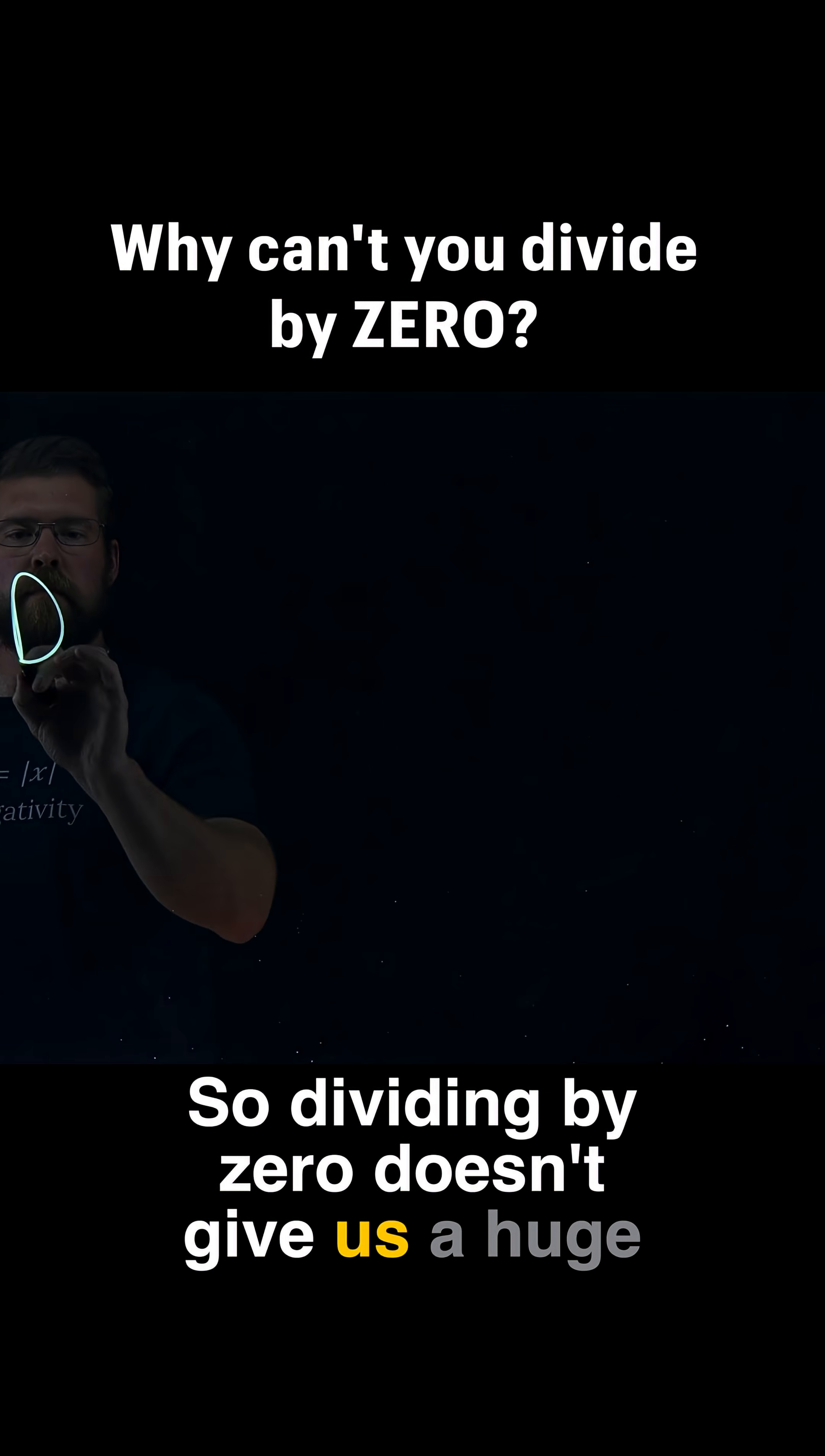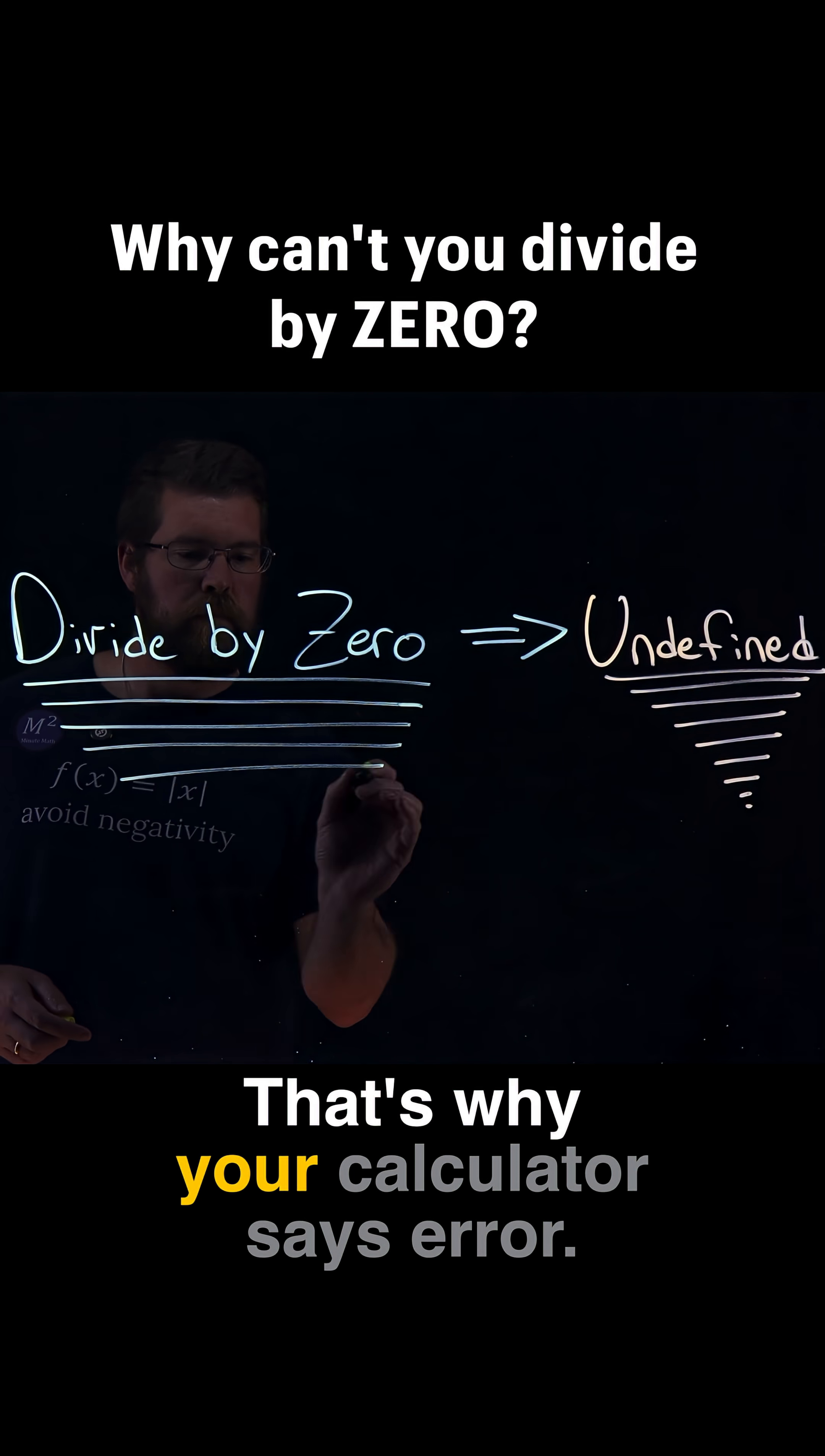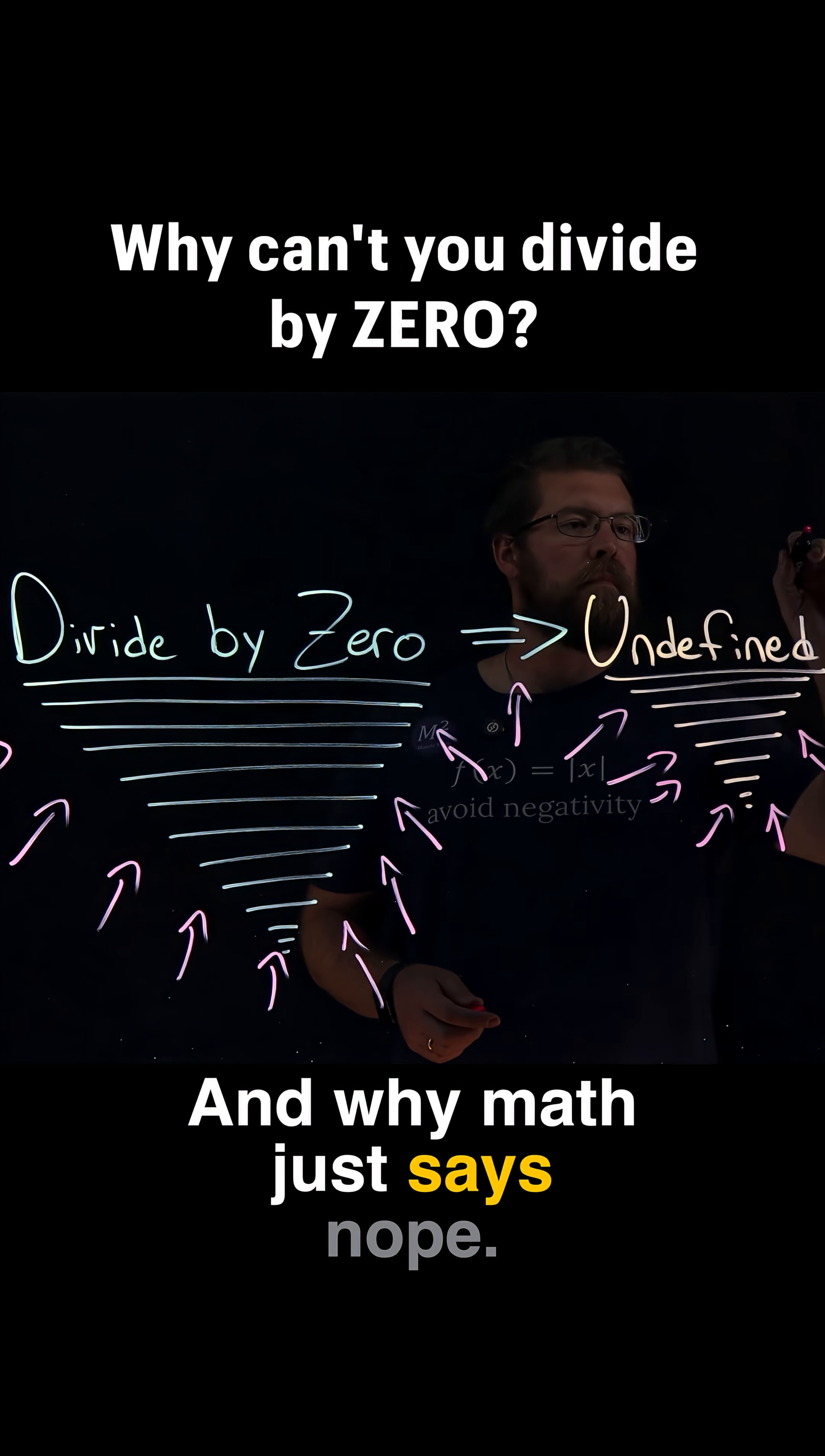So dividing by zero doesn't give us a huge number. It gives us no valid number at all. That's why your calculator says error and why math just, well, says nope.